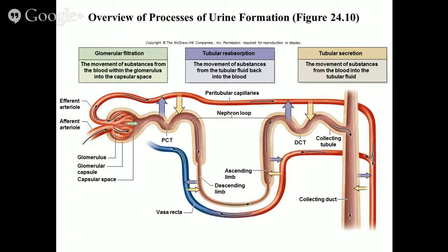At the PCT, loop of Henle, and DCT, we take things from that fluid and put them back into the bloodstream — that's tubular reabsorption. We also get the chance to do tubular secretion, taking things out of the bloodstream and putting them back into the nephron. It's simple: we snatch stuff out of the blood, throw it into the nephron, and the nephron immediately begins aggressively reabsorbing everything we need back into the blood, while moving out waste constituents like lactic acid.